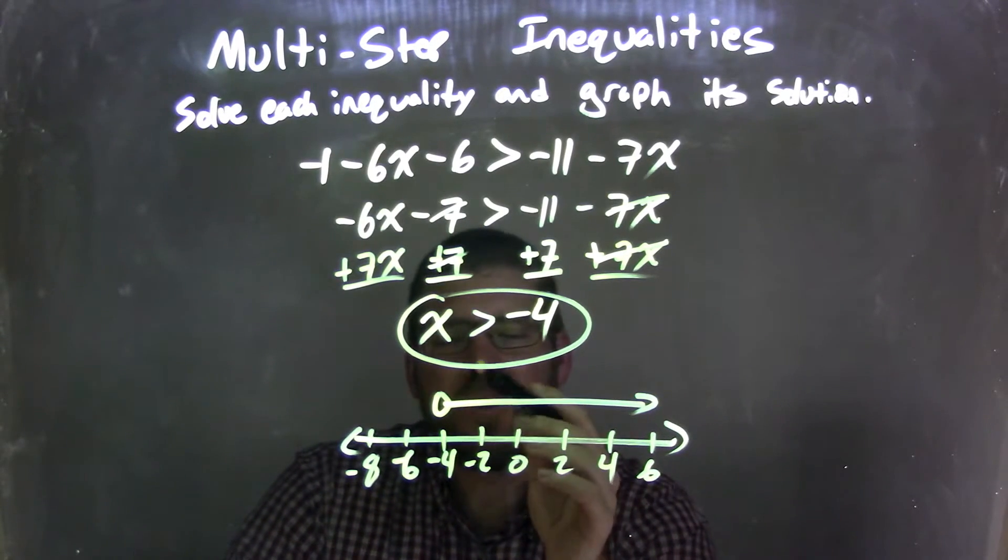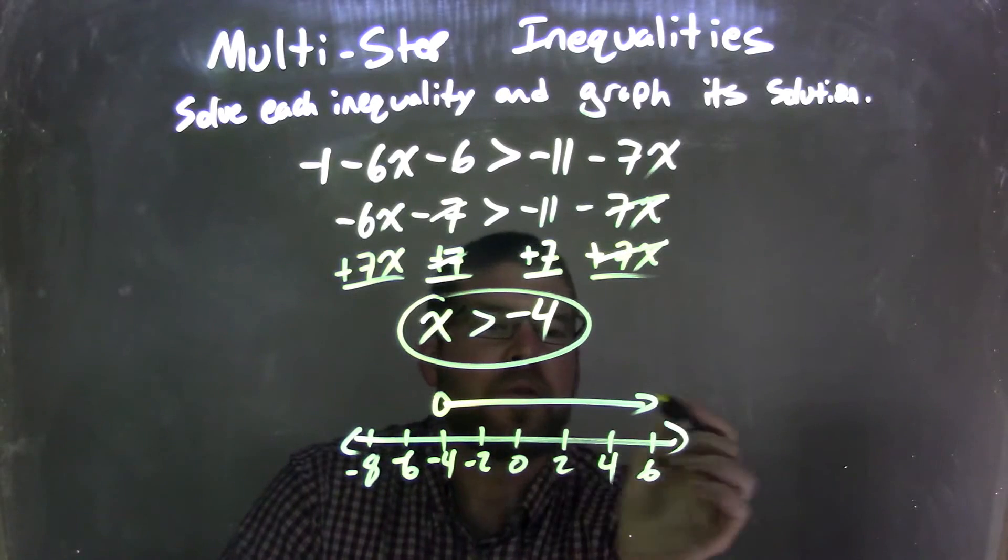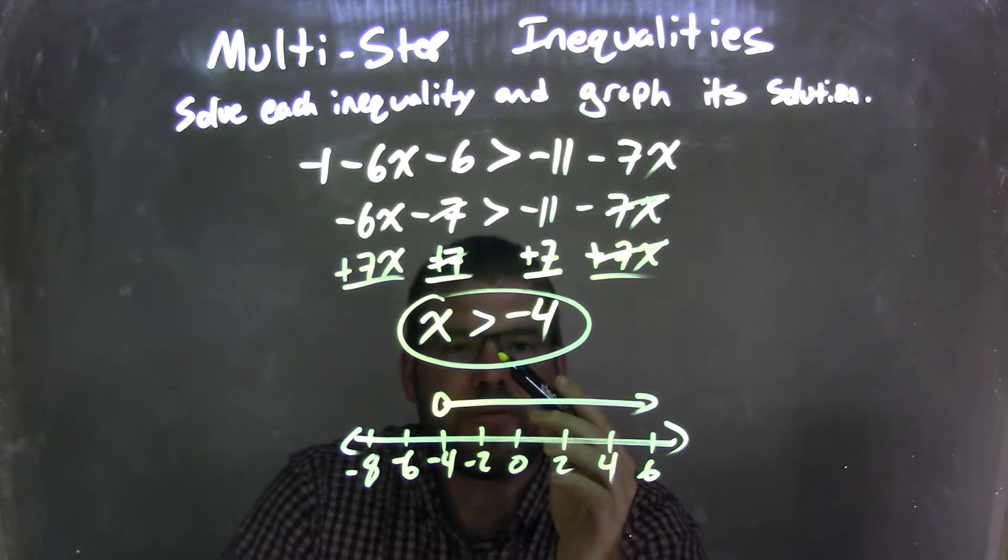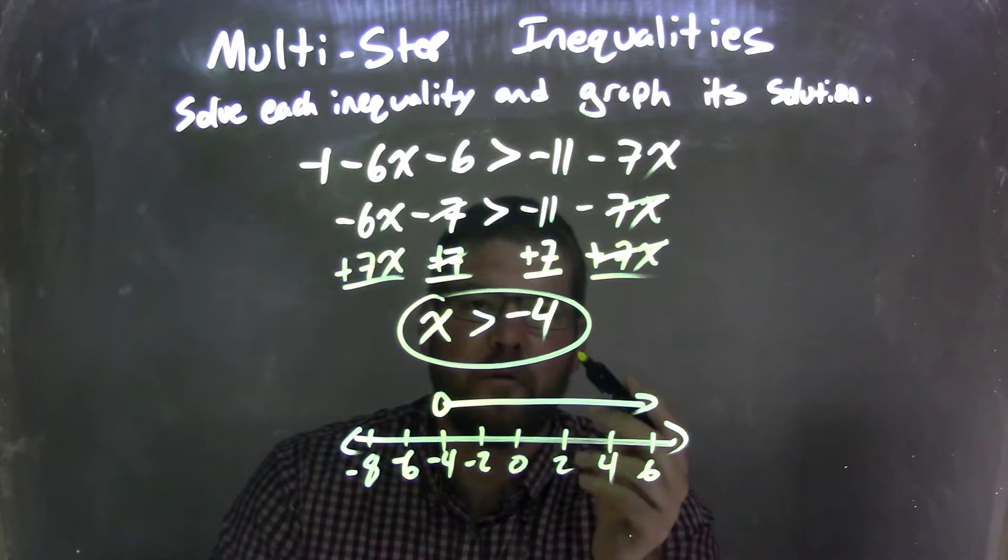So I have an open circle at negative 4 because x is not equal to negative 4. And then I put my arrow to the right because we said x is greater than negative 4. So now my graph matches my final answer, which is x is greater than negative 4.